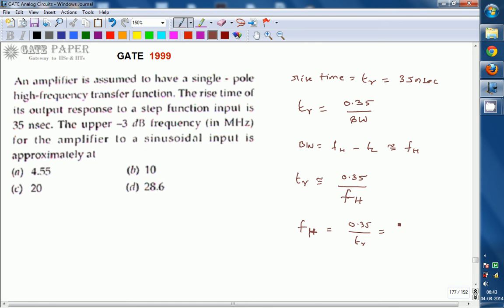So 0.35 divided by 35 nanoseconds. Here nano becomes plus 9, so 35 times 10 power minus 9. This gives 10 power 7, which is 10 megahertz.